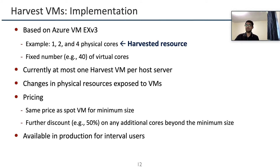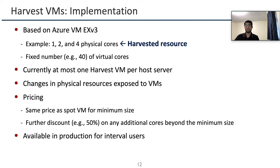Coming to its implementation, Harvest VMs are based on the Azure VM ESv3 specification, where the minimum size typically starts with one physical core and can assume higher minimum sizes like four or eight cores. In the current implementation, these VMs harvest only physical cores and are limited to at most one Harvest VM per host server to avoid resource contention. Changes in resources are exposed to Harvest VMs through the Hyper-V API. As far as pricing is concerned, Harvest VMs have the same price as spot VMs for their minimum size, and any additional resources cost 50% less than resources at the minimum size. Harvest VMs don't leak any information about co-located VMs or their workloads, and are currently available to internal users only.